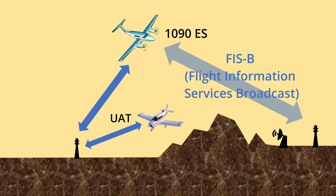FIS-B information transmitted to your ADS-B-IN system can display SIGMETs, AIRMETs, weather radar, and forecasts, just to name a few. Of course, to see all of this information, you'll need something to display the information from your ADS-B-IN device. For example, if you have a Stratus 3 system, traffic can be displayed on your iPad through ForeFlight, as well as the other services available.